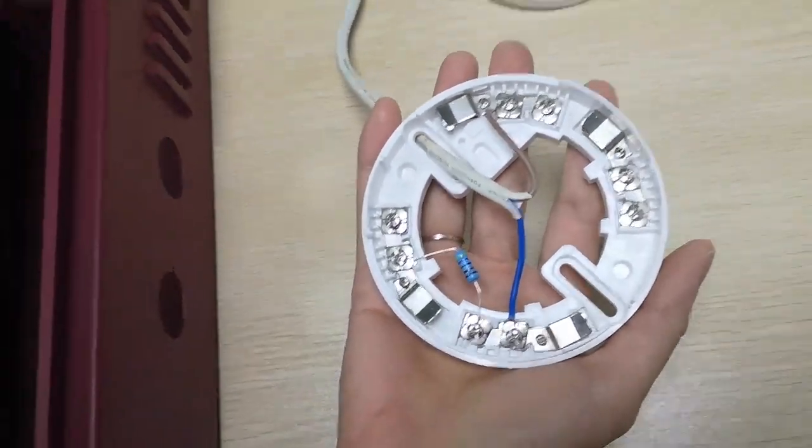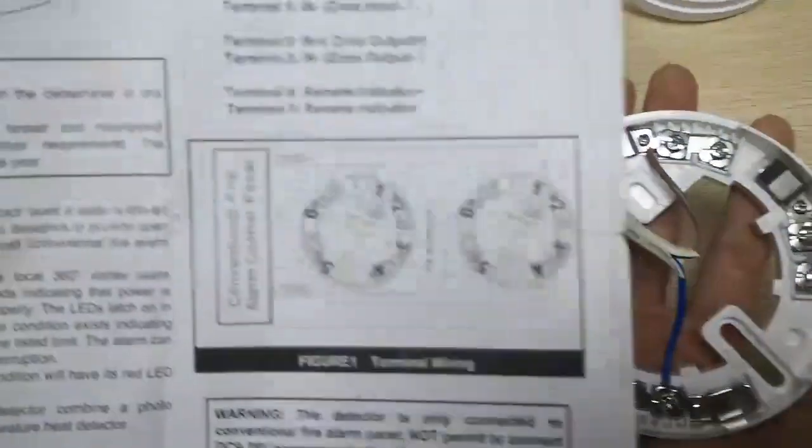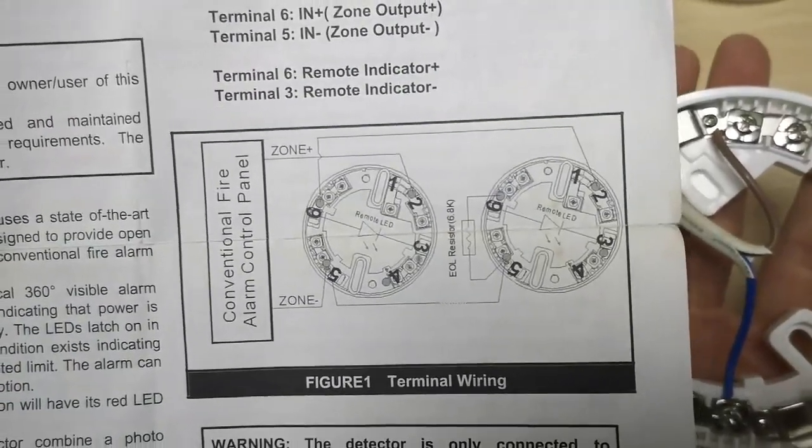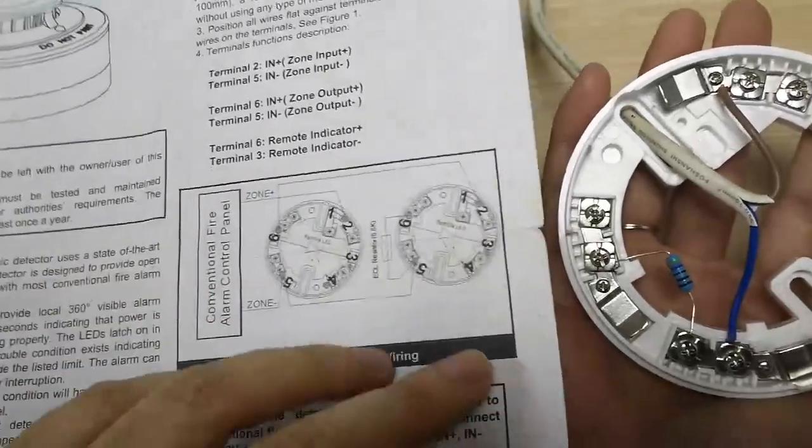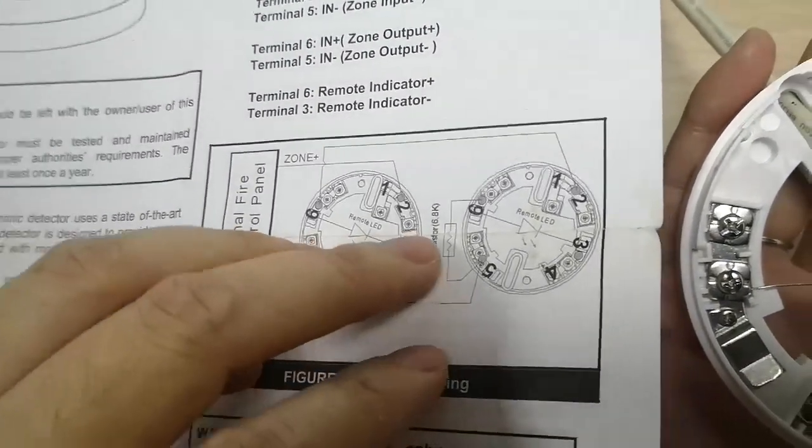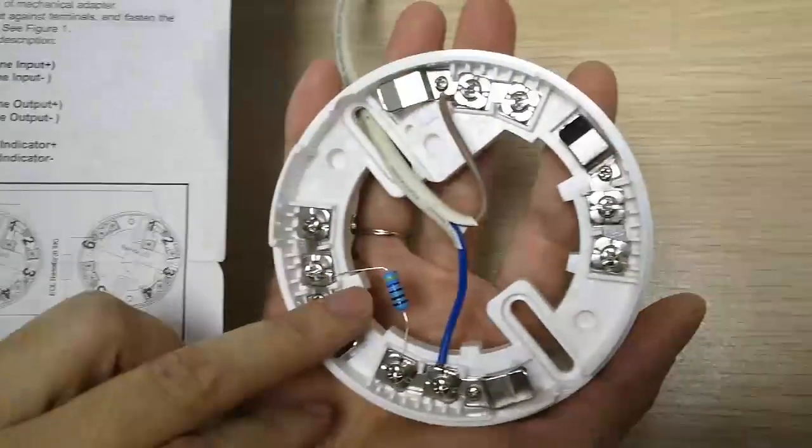This is the heat detector. Wire it according to the manual. Enter the loop. Enter the loop with EOL resistor. This one.